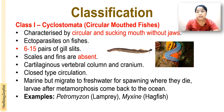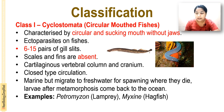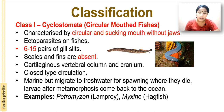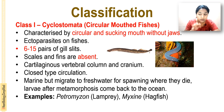First is Cyclostomata. 'Cyclo' means circular mouth fishes — they have a circular mouth. They are characterized by a circular and sucking mouth without jaws; they are Agnatha. They are ectoparasites on fishes — 'ecto' means outside, so ectoparasites live on the outside of the body of other organisms.